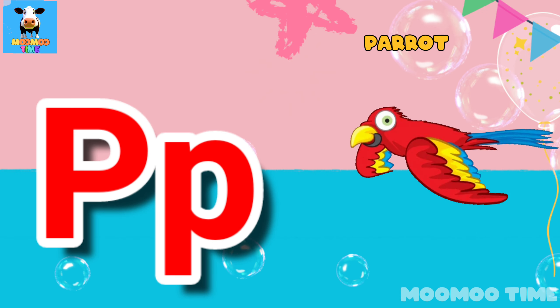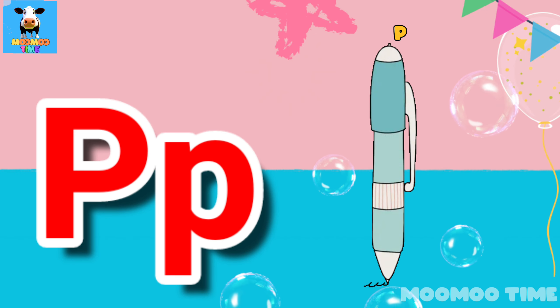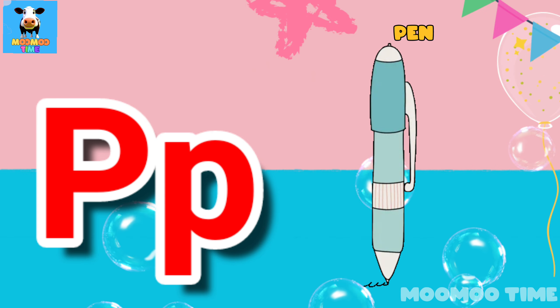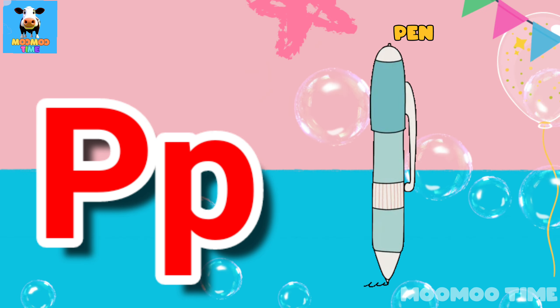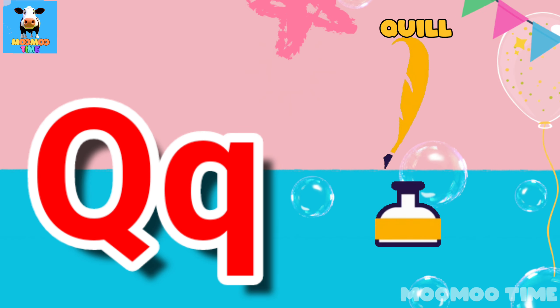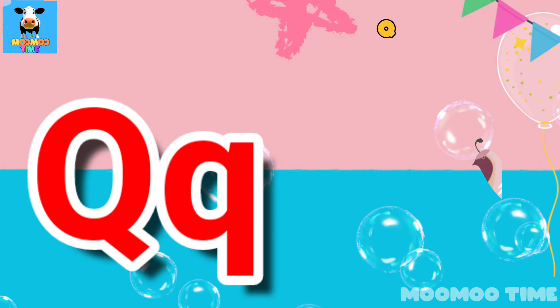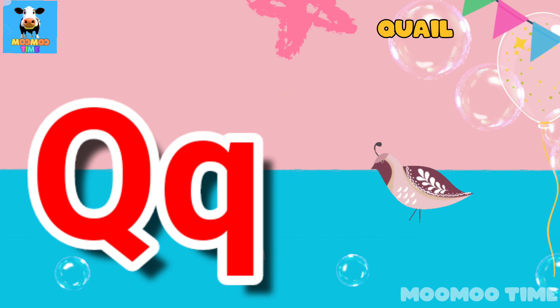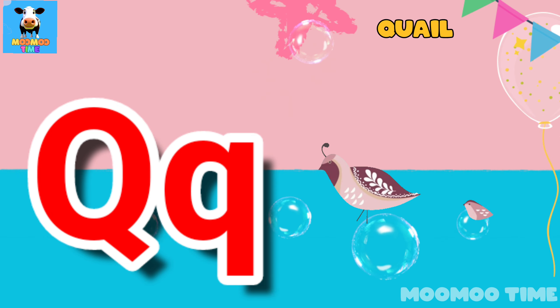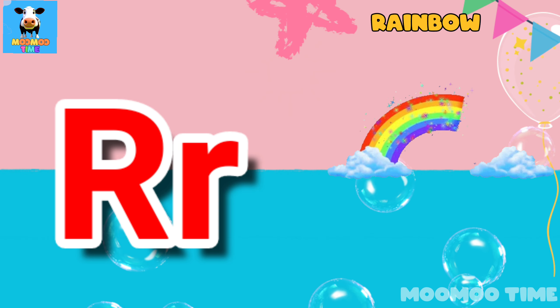P for parrot. P for pen. Q for quail. R for rainbow.